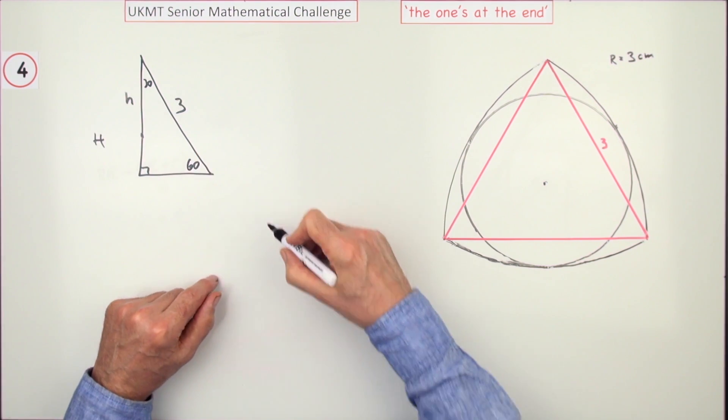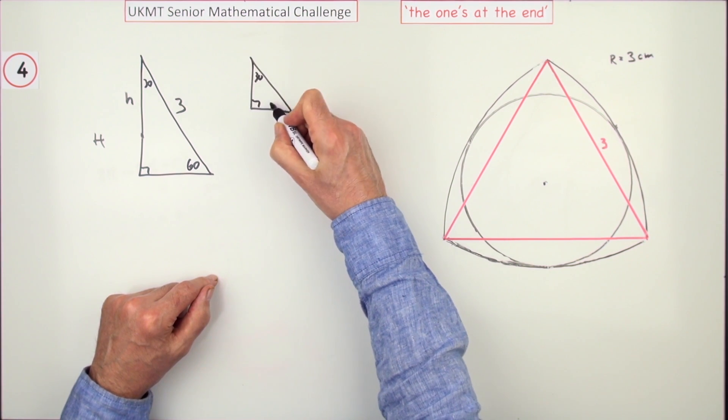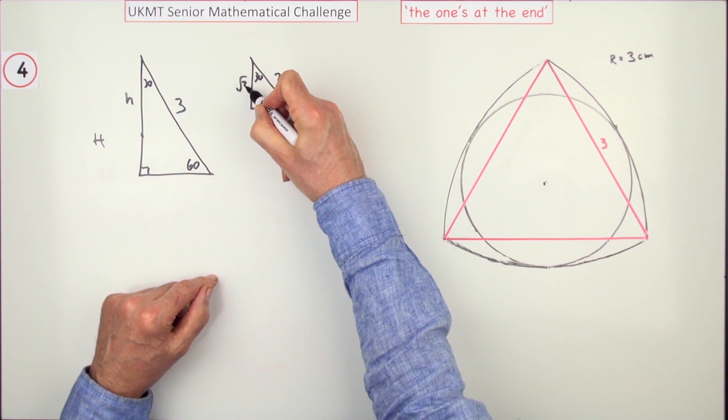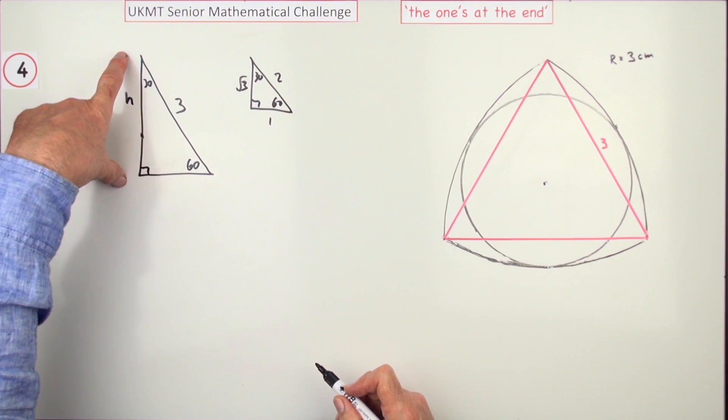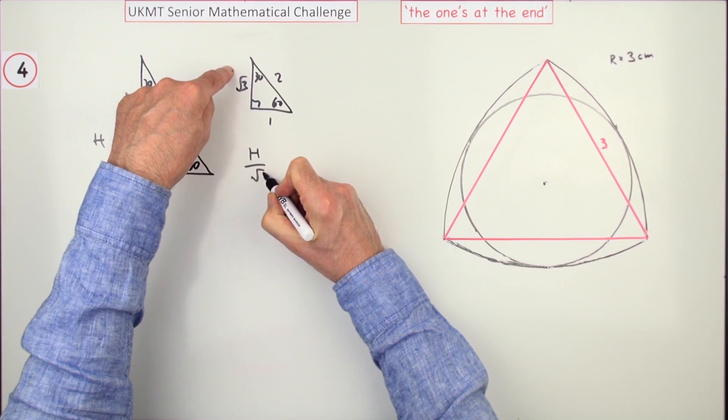Because it is just a 30-60 triangle, you can compare it to any 30-60 triangle. The simplest one goes 1, 2, √3. So working out the total length, h over √3 equals 3 over 2.